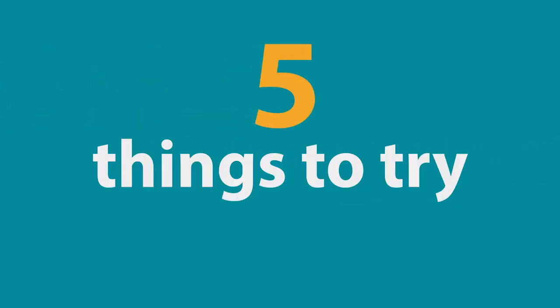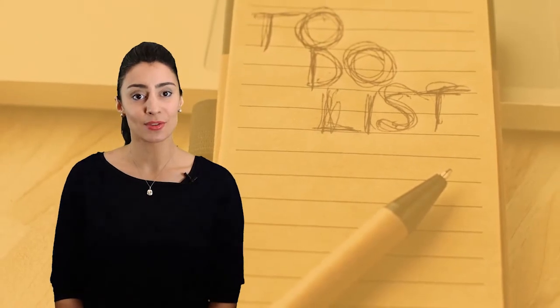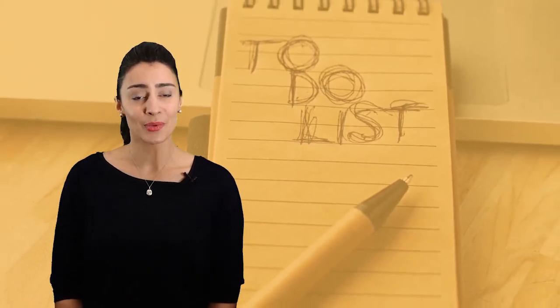Five things to try. One, if you find yourself twiddling your thumbs, go back to your to-do list. Staying busy through the day will make you feel better and productive, which in turn helps keep your energy levels up.